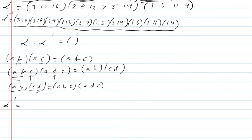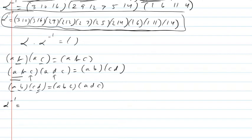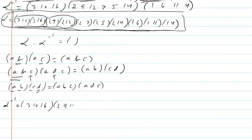I want to do the inverse of alpha. This was alpha, already turned into a product of 2-cycles. But now I can look at them two at a time. (3, 10), (3, 16) I can write as the 3-cycle (3, 10, 16); (2, 9), (2, 12) I can write as (2, 9, 12); and (2, 7), (2, 5) I can write as the 3-cycle (2, 7, 5).